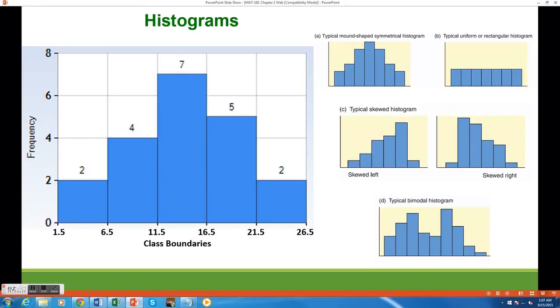Mound-shaped symmetrical data, like in example A, is called normally distributed and is something we will focus on heavily in the second half of the semester.